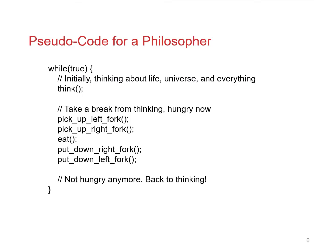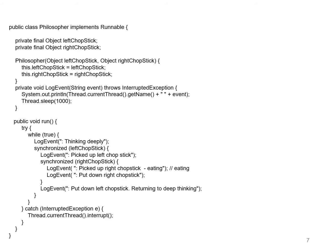The pseudocode for a philosopher: forever, they are initially thinking. Then they want to eat, so they pick up the left fork, pick up the right fork, they start eating, then they put down the right fork and put down the left fork. They're not hungry anymore, so they go back to thinking. That's all philosophers do — a very simple state machine.